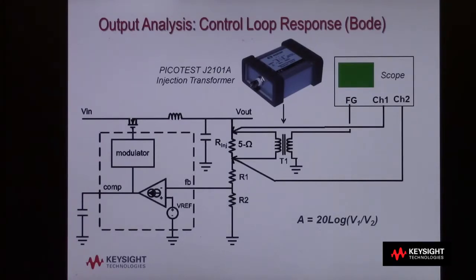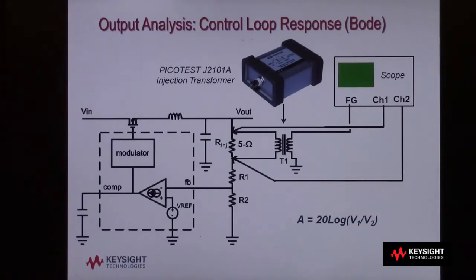The measurement system — in this case our oscilloscope — measures AC voltage levels at the top of the feedback network as well as at Vout, and computes the gain as 20 log Vout over Vn at each frequency within the swept band. Although this measurement is typically performed using a low frequency network analyzer, it can also be performed using a Keysight InfiniVision X-Series oscilloscope.